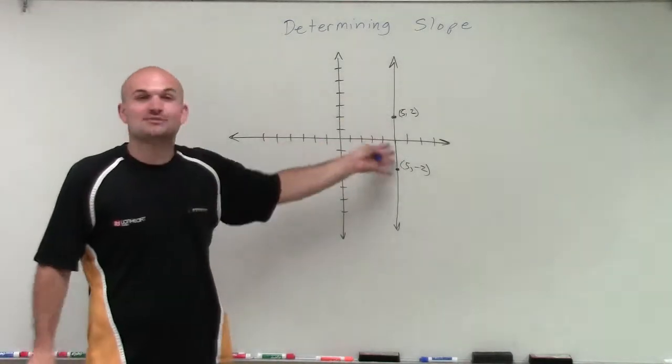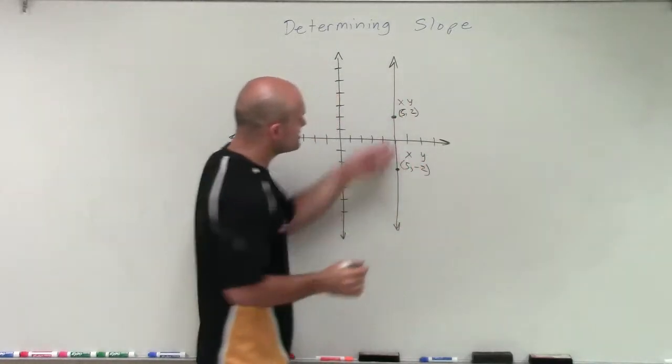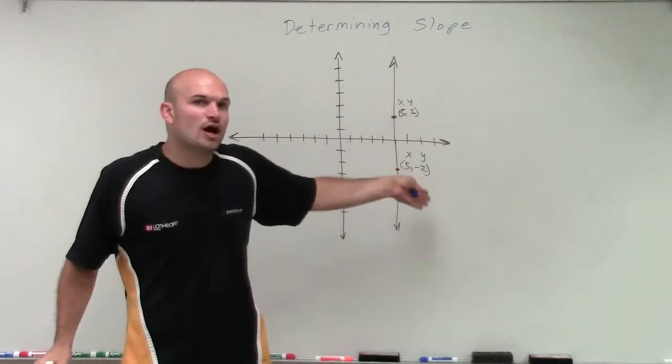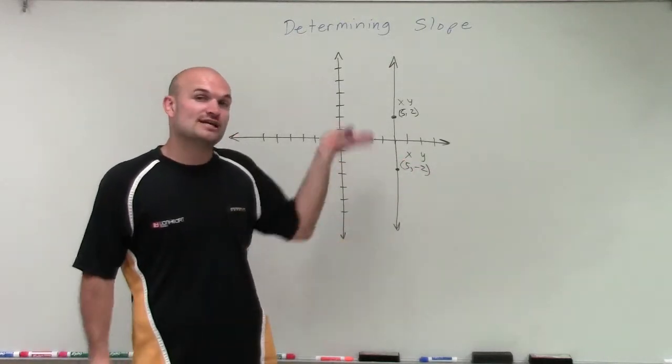Now I can plug in these points and I can find the change in my x coordinates over my y coordinates. But what we notice is my x coordinates are not changing at all. They're both 5. So horizontally my graph is not changing. It's only changing vertically.